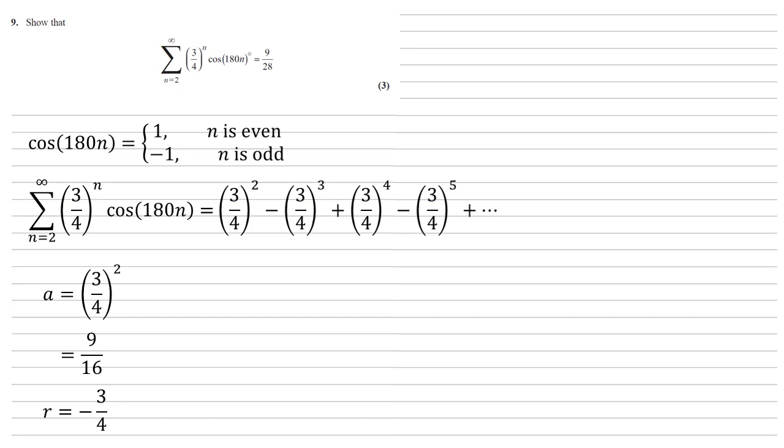So now as we're doing the sum to infinity of a geometric sequence, we know a, we know r, we can put this into our formula, which is a over 1 minus r, so 9 sixteenths over 1 plus 3 quarters, for the minus and negative, which equals 9 over 28 as required.